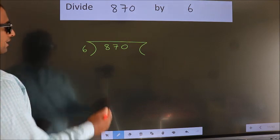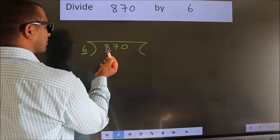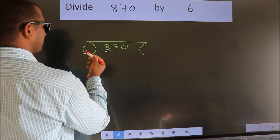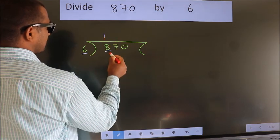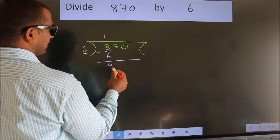Next, here we have 8, here 6. A number close to 8 in 6 table is 6 once 6. Now, we should subtract. We get 2.